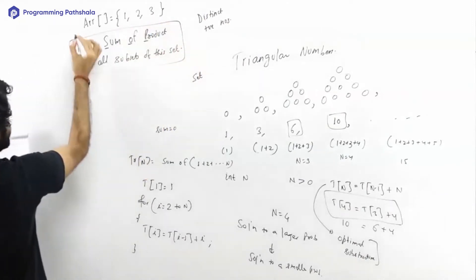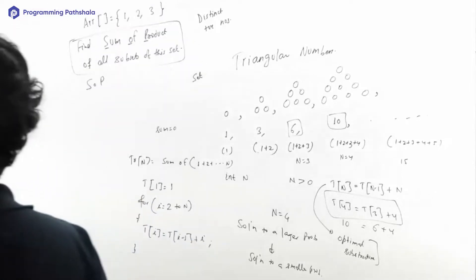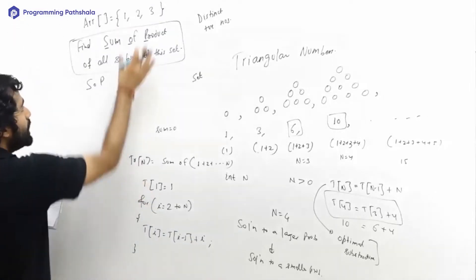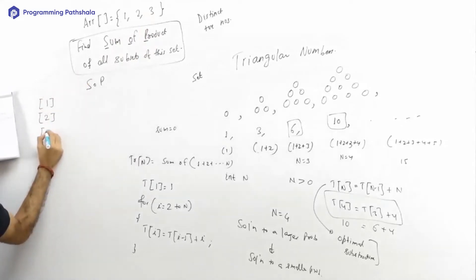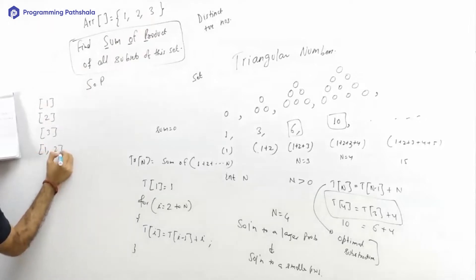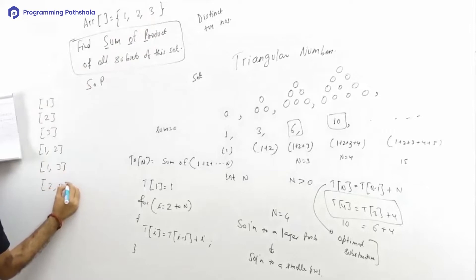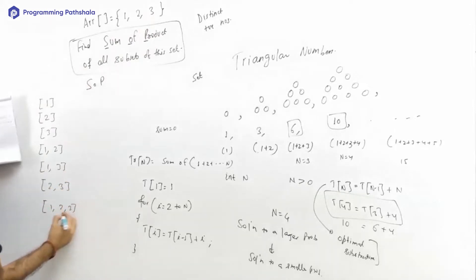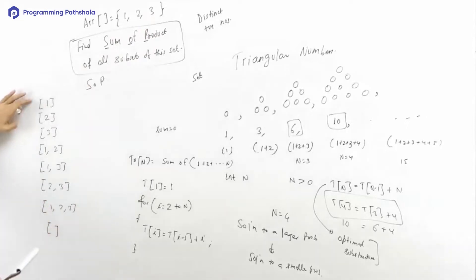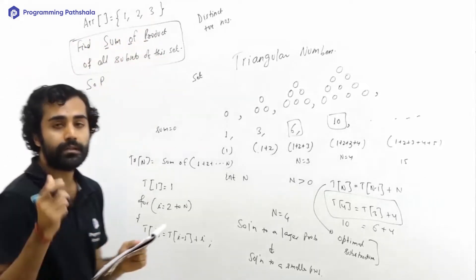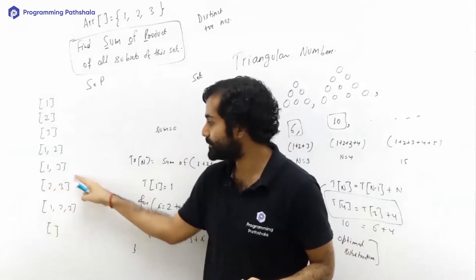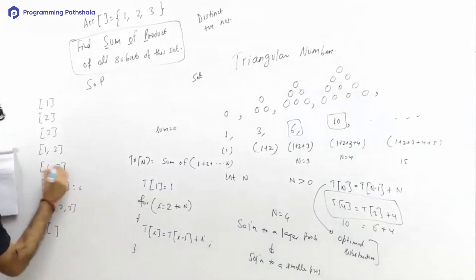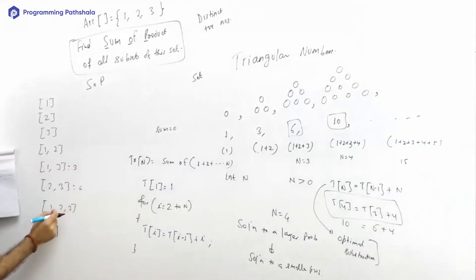Let's list down all the subsets. There'll be {1}, {2}, {3}, {1,2}, {1,3}, {2,3}, {1,2,3}, and the empty set — eight subsets total. We need the sum of products of all subsets. The product of a subset is the product of all its elements. So the product of {2,3} is 6, the product of {1,2,3} is also 6, and the product of {1,2} is 2.